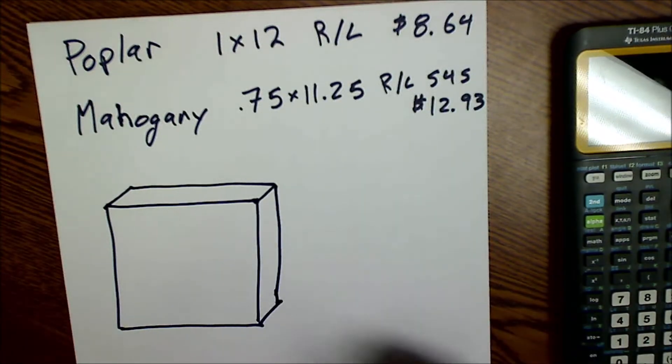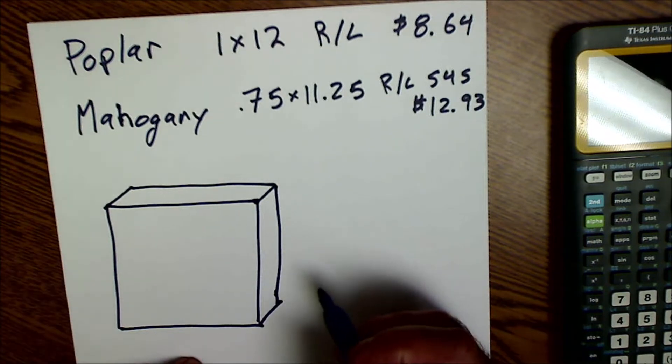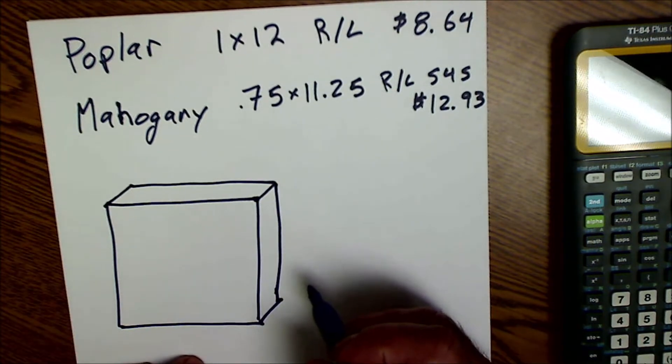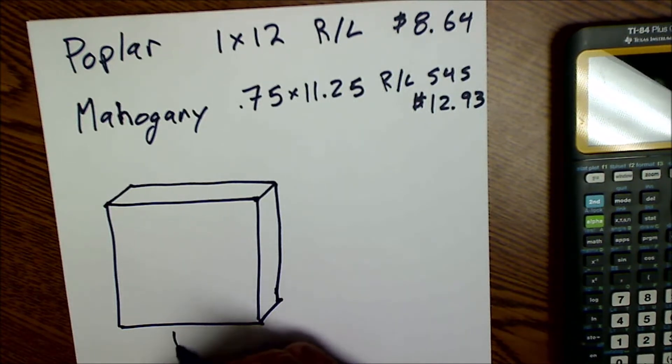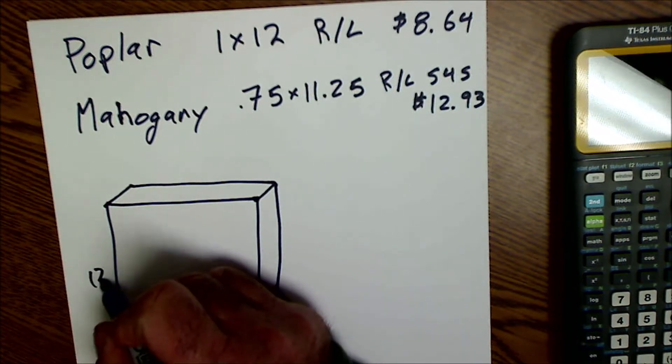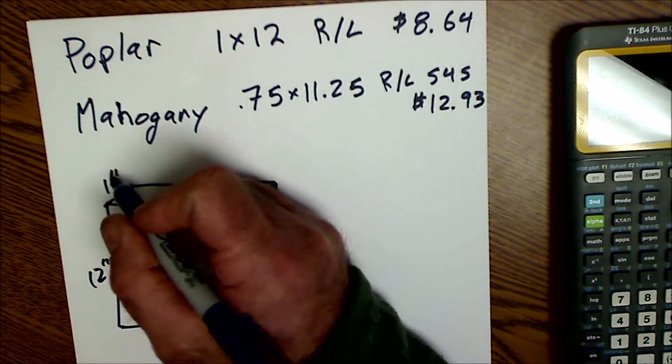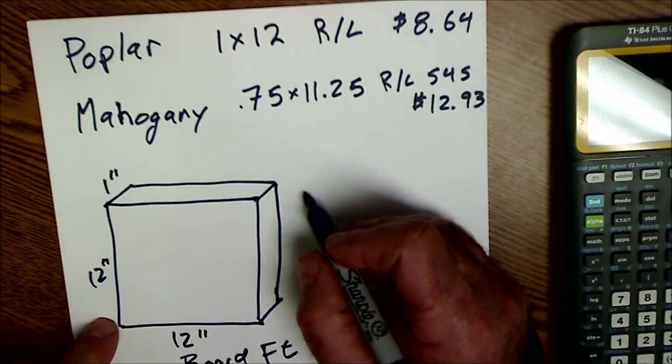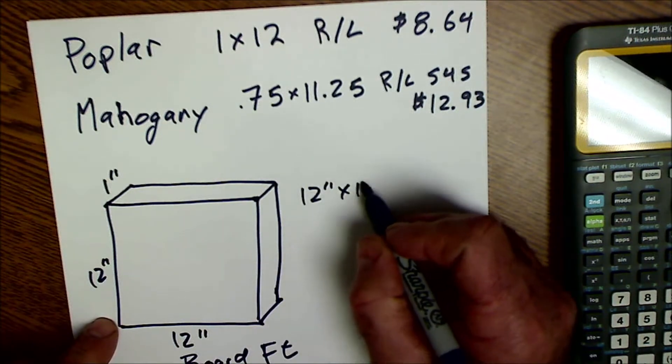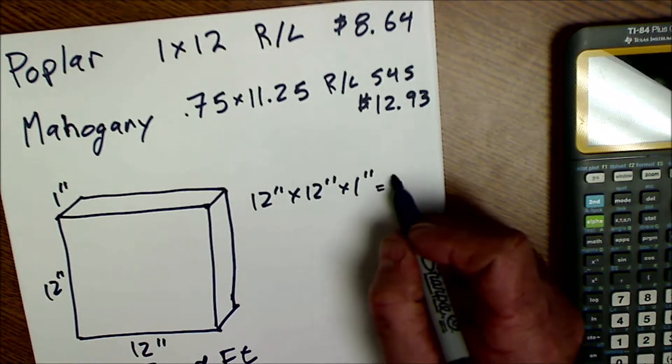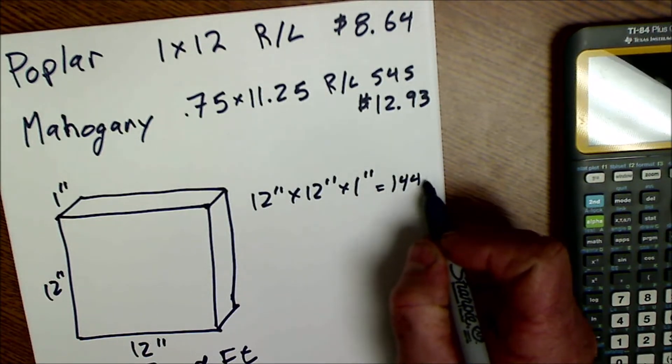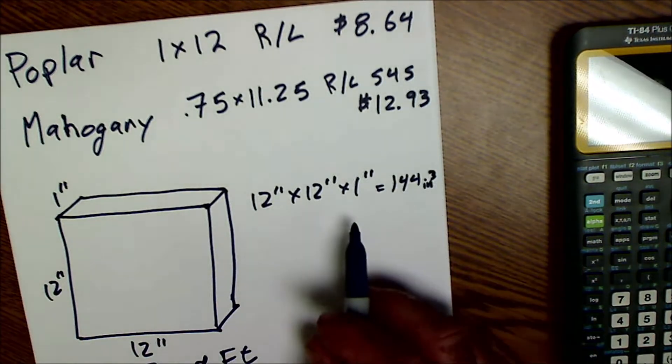Before we get started, we kind of need a unit that's comparable across the board. And usually in woodworking and cabinetry, that unit is called the board foot. A board foot is actually a cubic measurement. It is 12 inches by 12 inches by 1 inch deep. So you're going to have 12 inches times 12 inches times 1 inch, and that's going to give you 144 cubic inches. So that's what a board foot is.